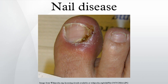Paronychia is a bacterial or fungal infection where the nail and skin meet. Koilonychia is when the nail curves upwards due to an iron deficiency. The normal process of change is: brittle nails, straight nails, then spoon-shaped nails.